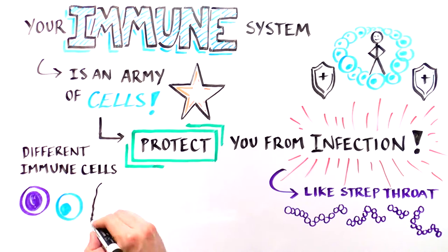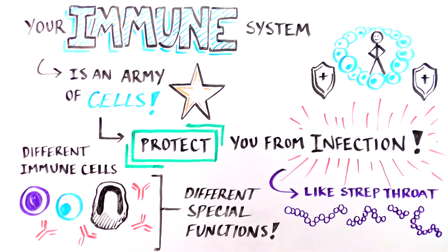Different types of immune cells have different special functions, like recognizing an infection, killing infected cells, or closing up open wounds.